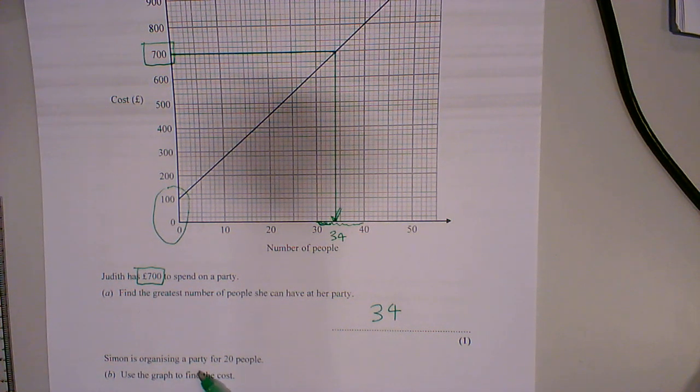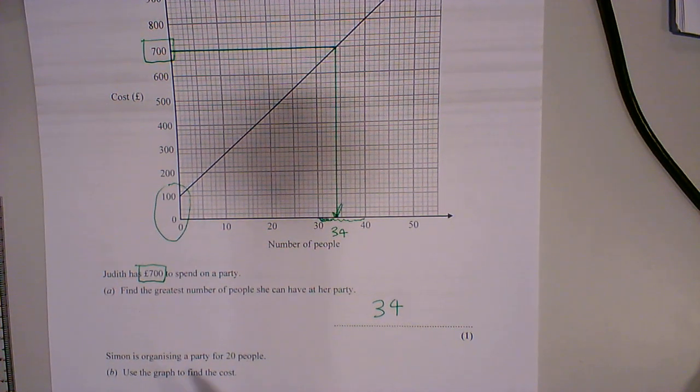Part B, Simon is organising a party for 20 people. Use the graph to find the cost.